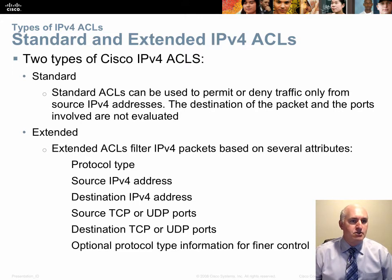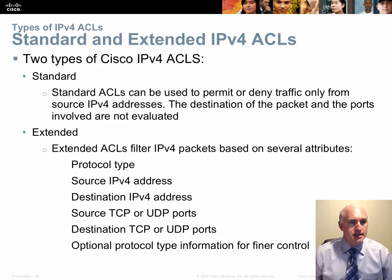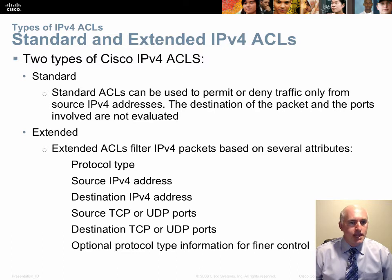Because a standard ACL can only filter by source IP, you have to place it as close to the destination as possible. It would be better to put it close to the source to grab traffic early and get it off your network, but since you can't identify the destination in the statements, you must wait until the traffic is as close as possible to the destination.